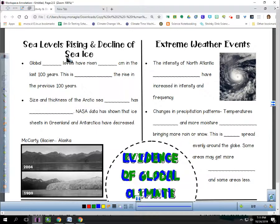One of the pieces of evidence we talked about is sea levels rising and the decline of sea ice. Overall, global sea levels have risen 17 cm in the last 100 years. This is double the rise in the previous 100 years. And the size and thickness of the Arctic sea ice has decreased. NASA data has shown that the ice sheets in Greenland and Antarctica have decreased.